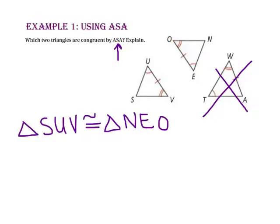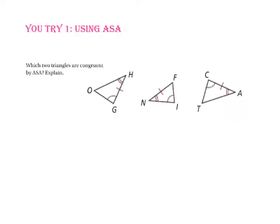Notice that we listed the names of the triangles in corresponding congruent order. Pause the video and do you-try number one: which two triangles are congruent by angle-side-angle? When using angle-side-angle, we want the congruent corresponding sides to be included between the two angles.